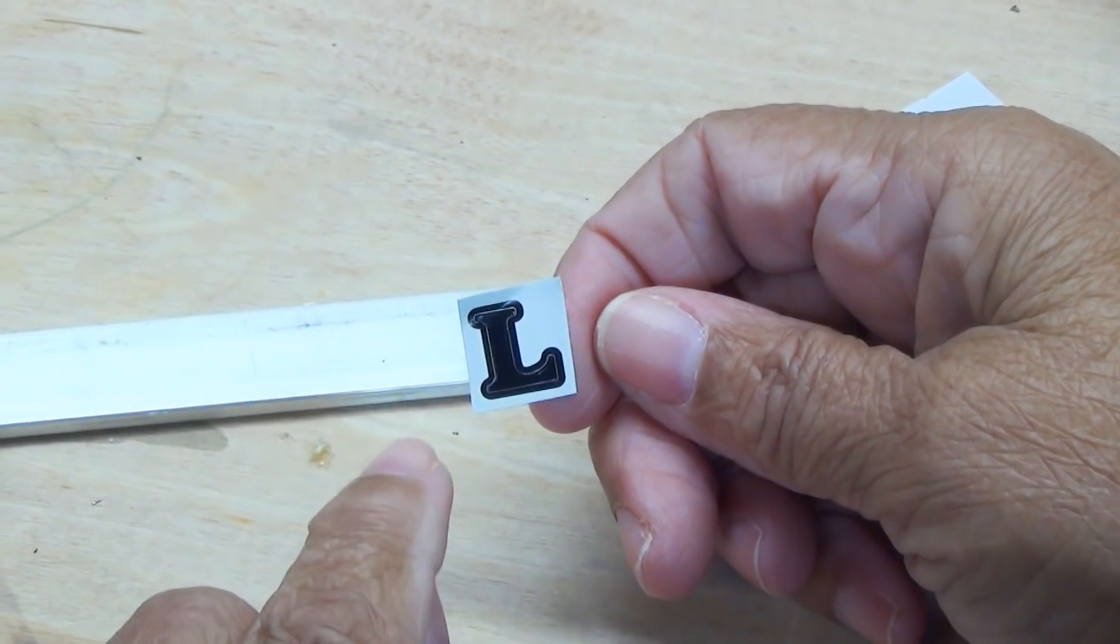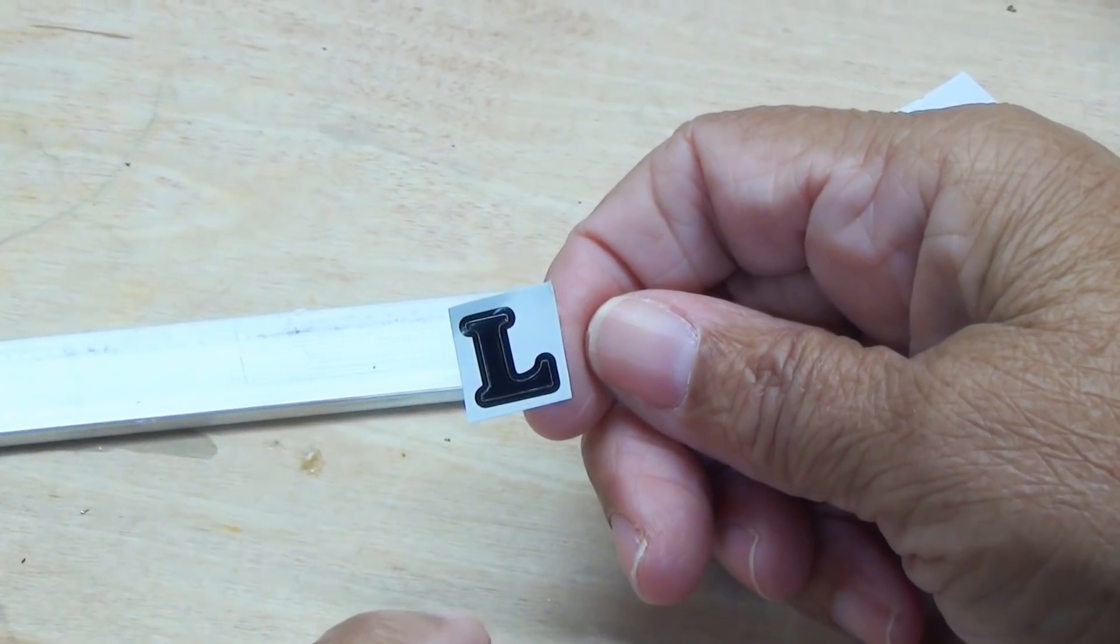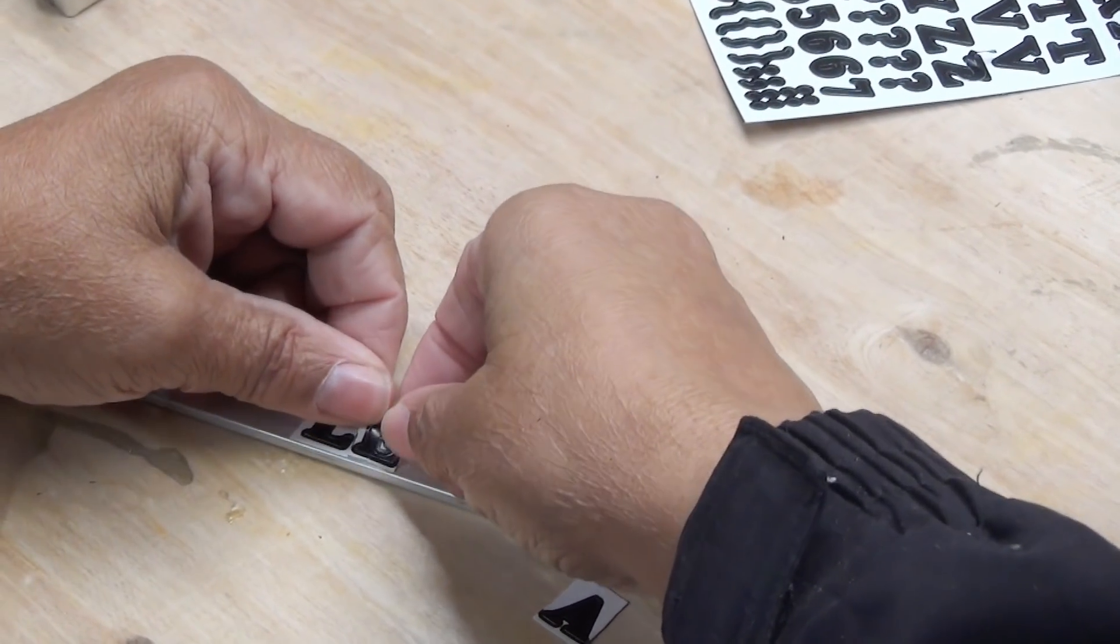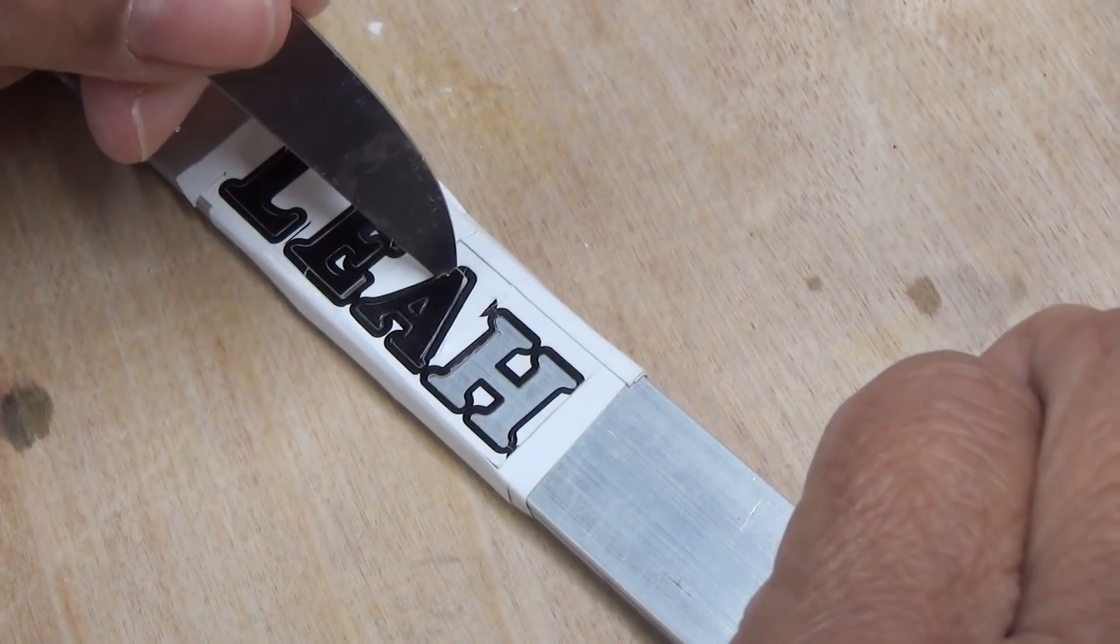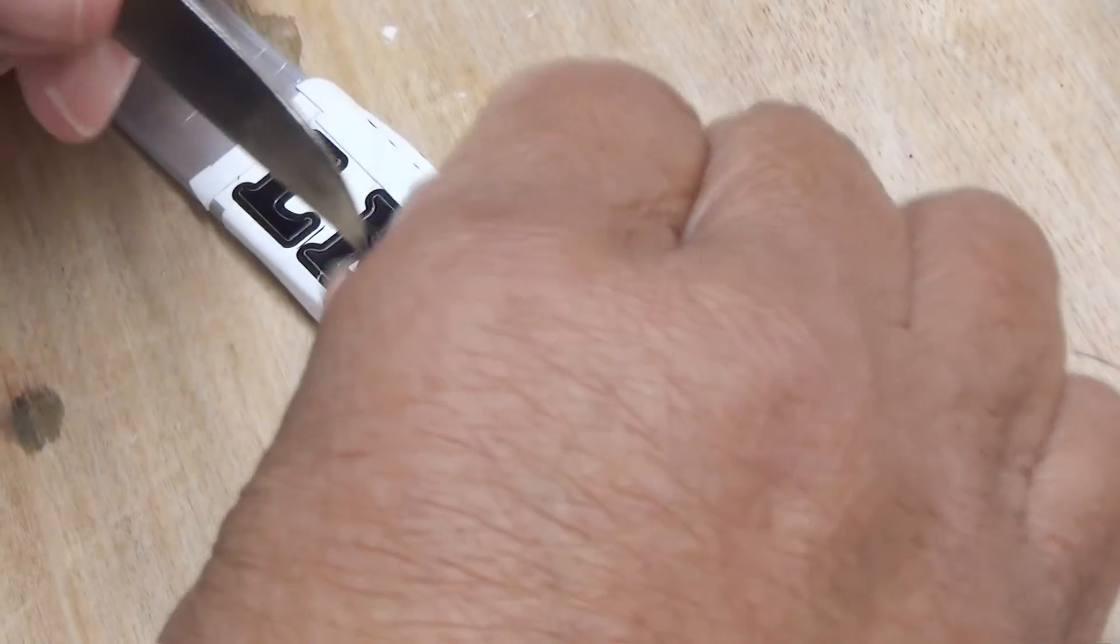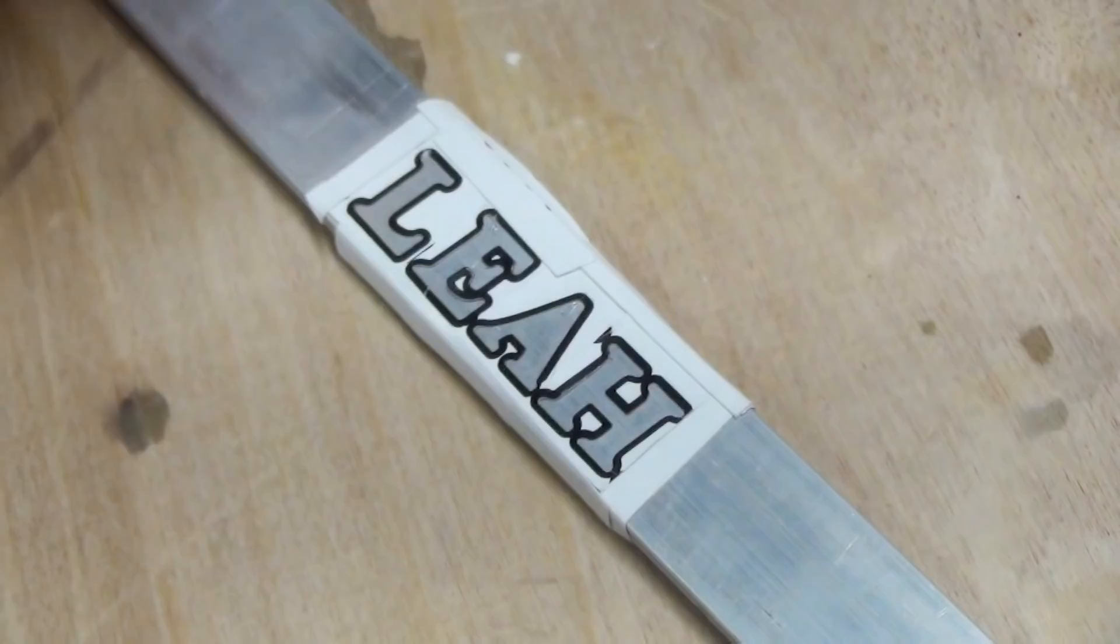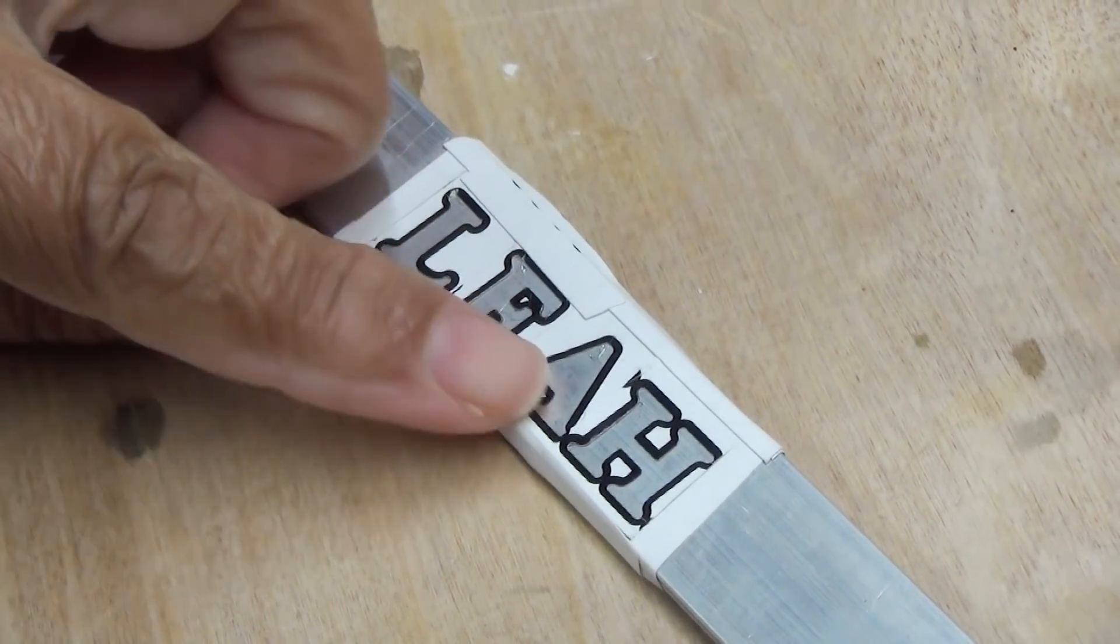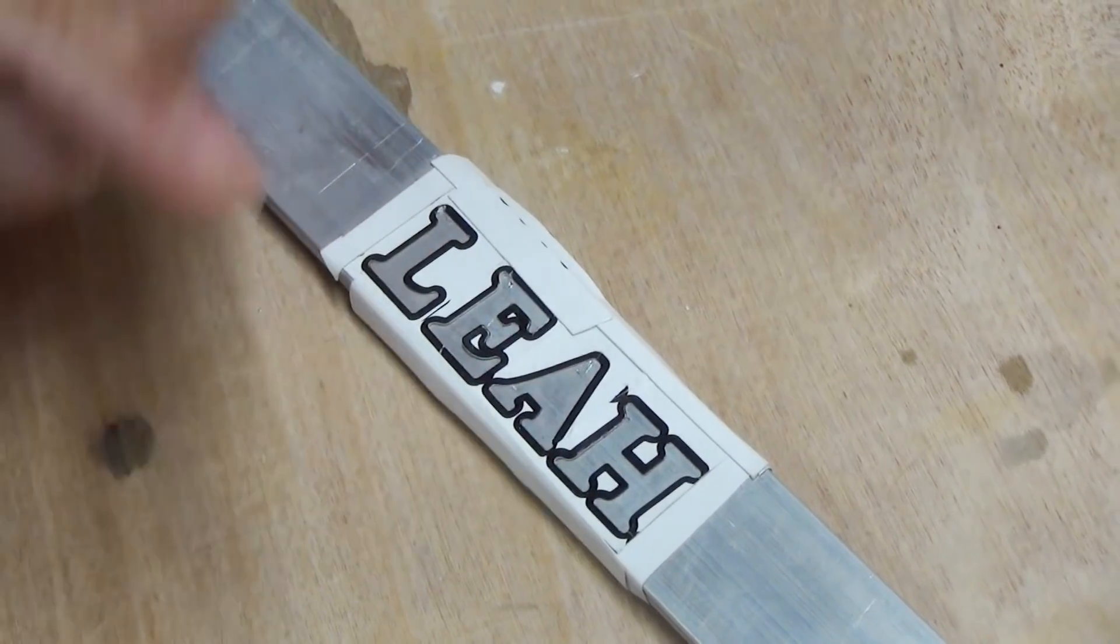Now I'm using vinyl letters, but I've got to tell you this. You're only limited by your own imagination. You can take sheet vinyl, cut out a design, a logo, whatever it is that you want to etch. And like I said, for demonstration purposes, we're just using vinyl letters.